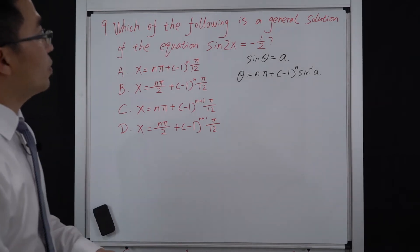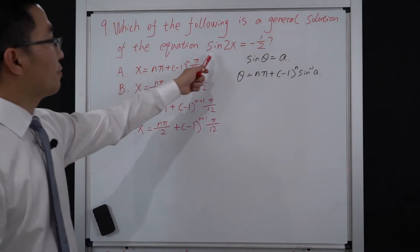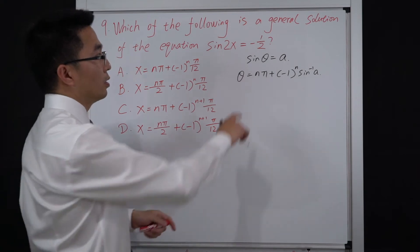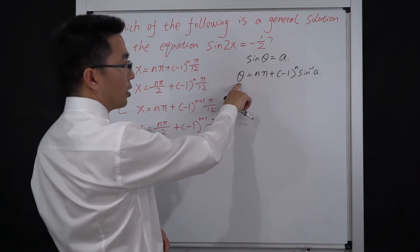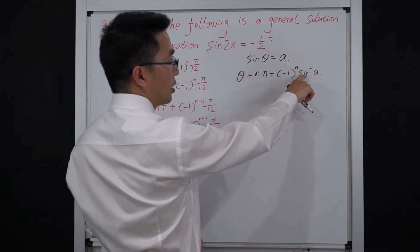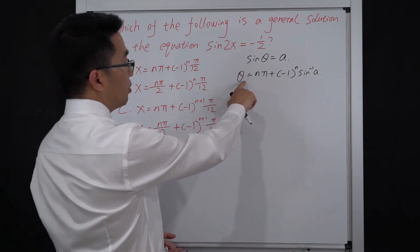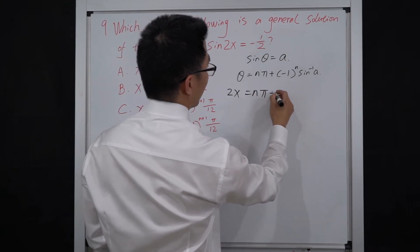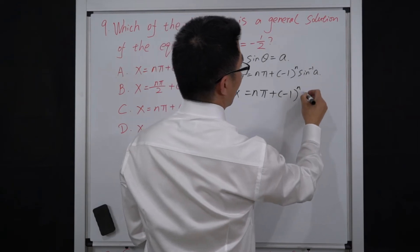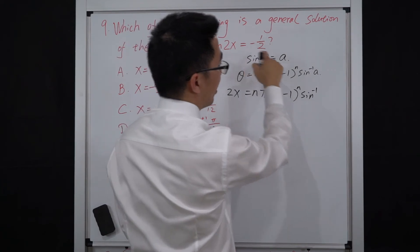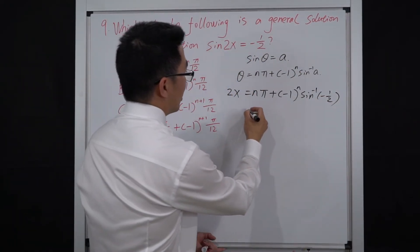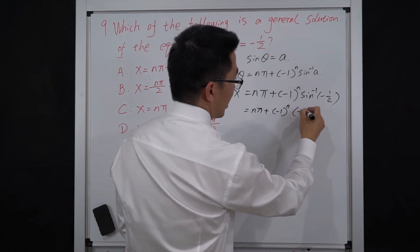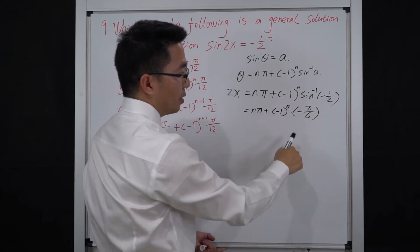In question 9, which of the following is the general solution to sin(2x) equal to negative one half? For the general solution, using the formula from the end of the past paper: if sin θ equals a, then the general solution for θ is nπ plus (−1)ⁿ times sin⁻¹(a). Comparing, we have θ equal to 2x, so 2x equals nπ plus (−1)ⁿ times sin⁻¹(−1/2). Since sin⁻¹(−1/2) equals −π/6, we have a equal to negative one half, so this value is −π/6.